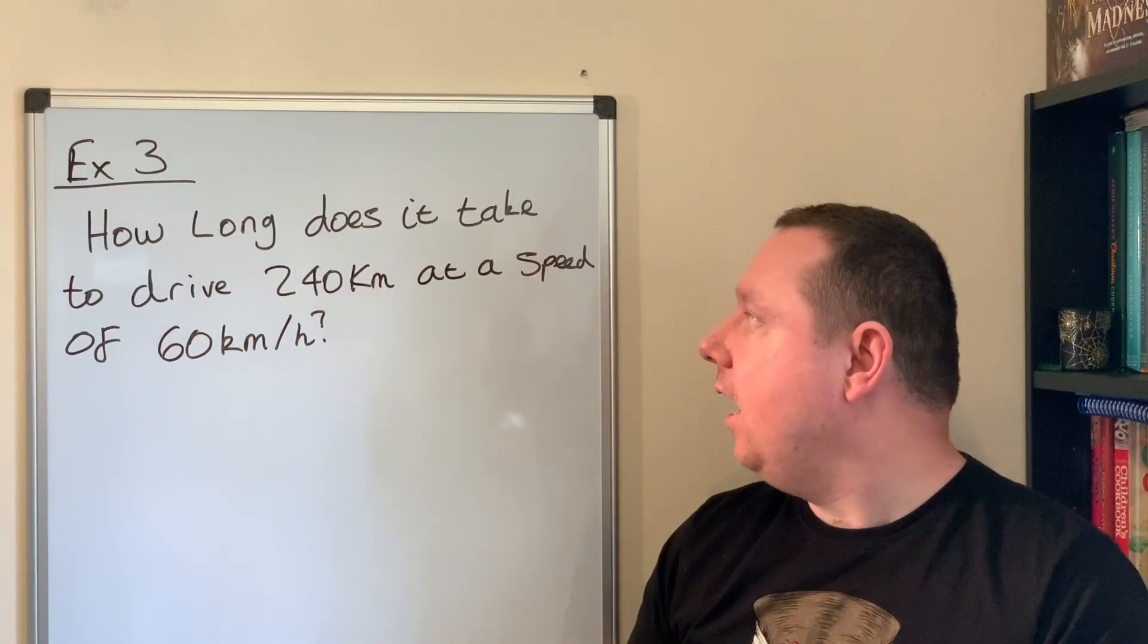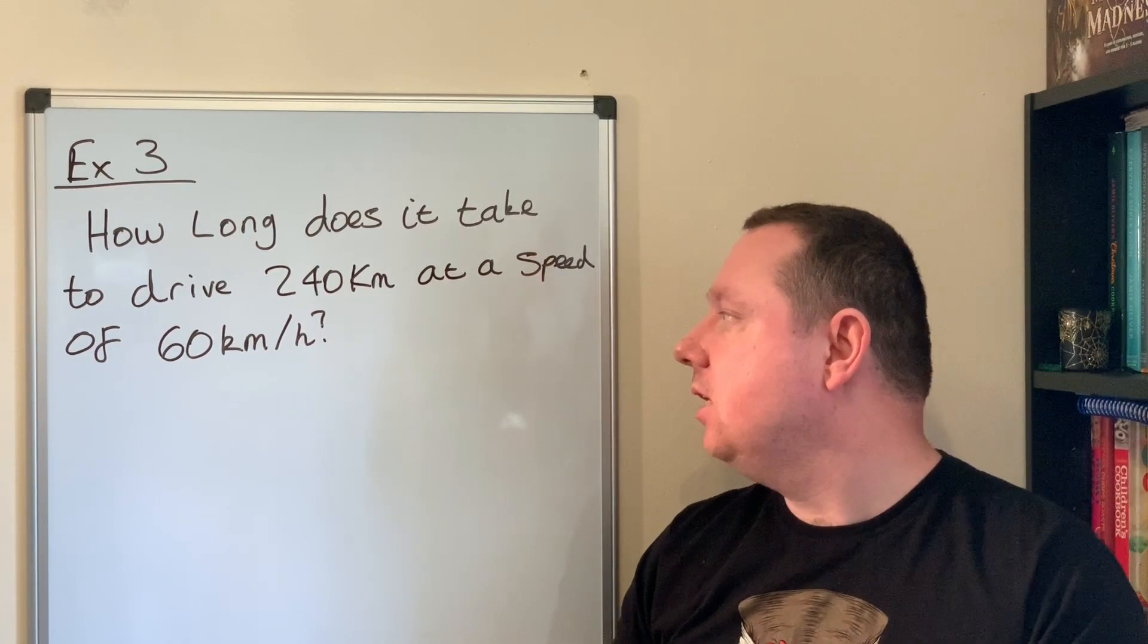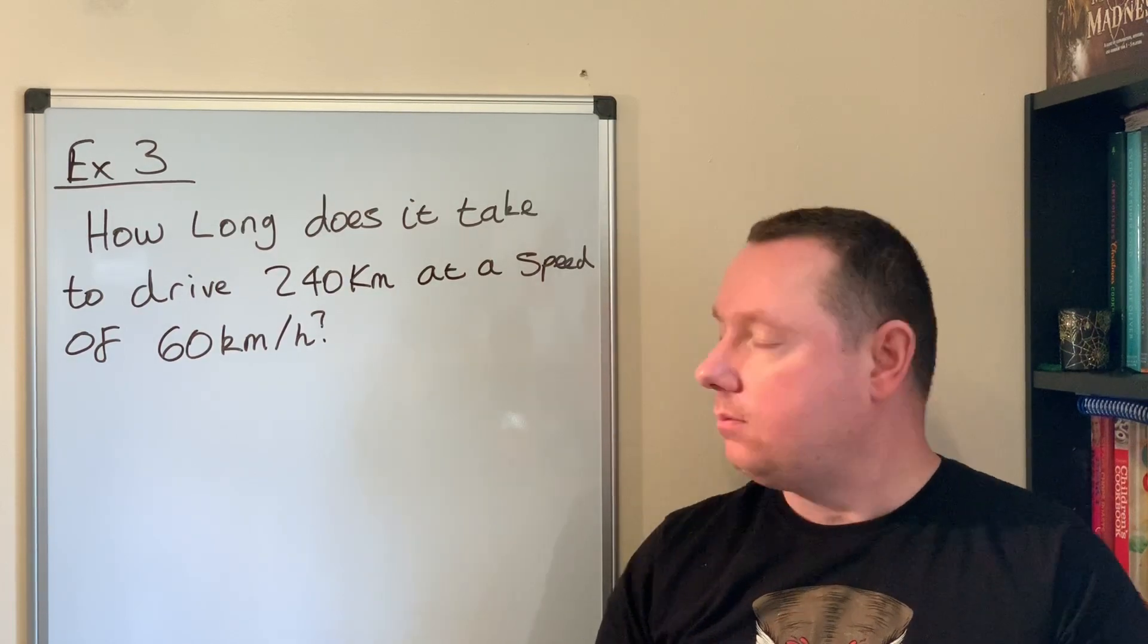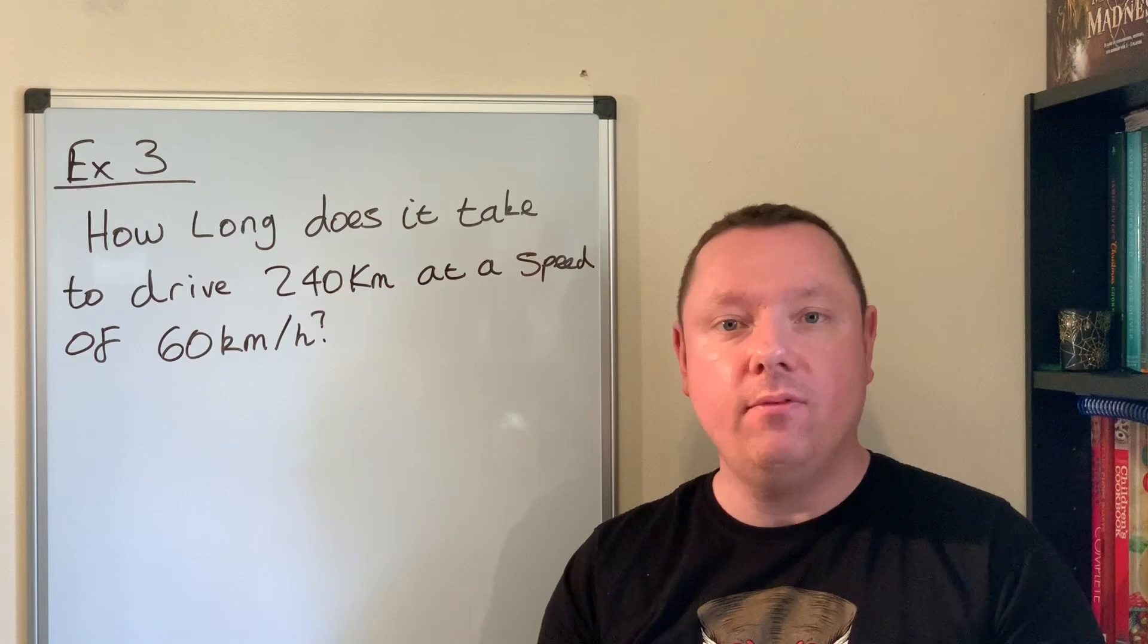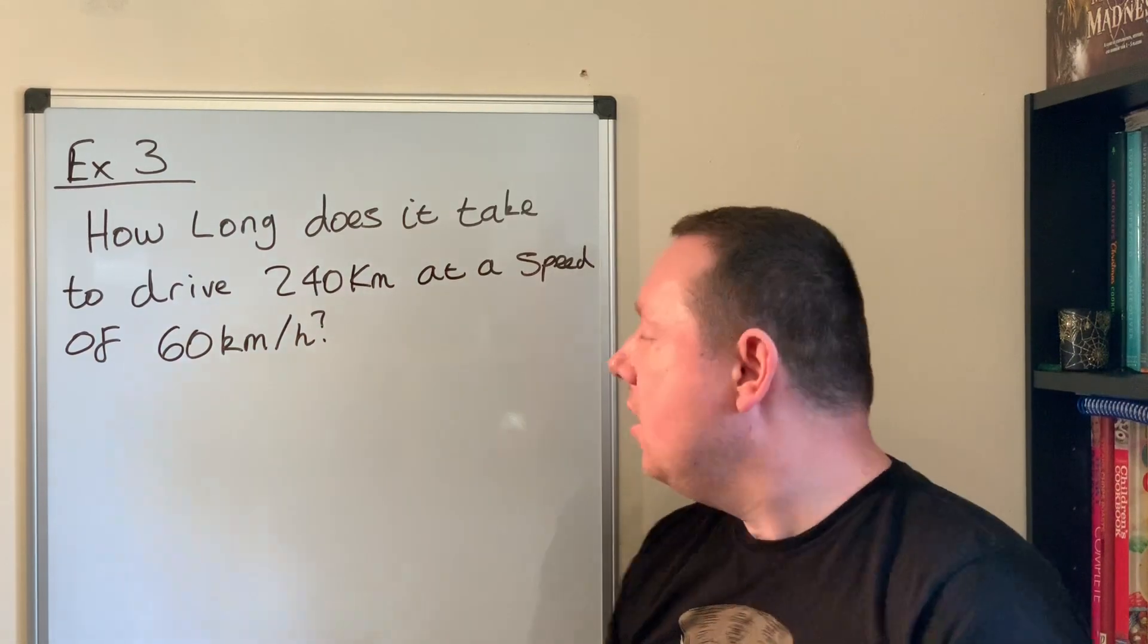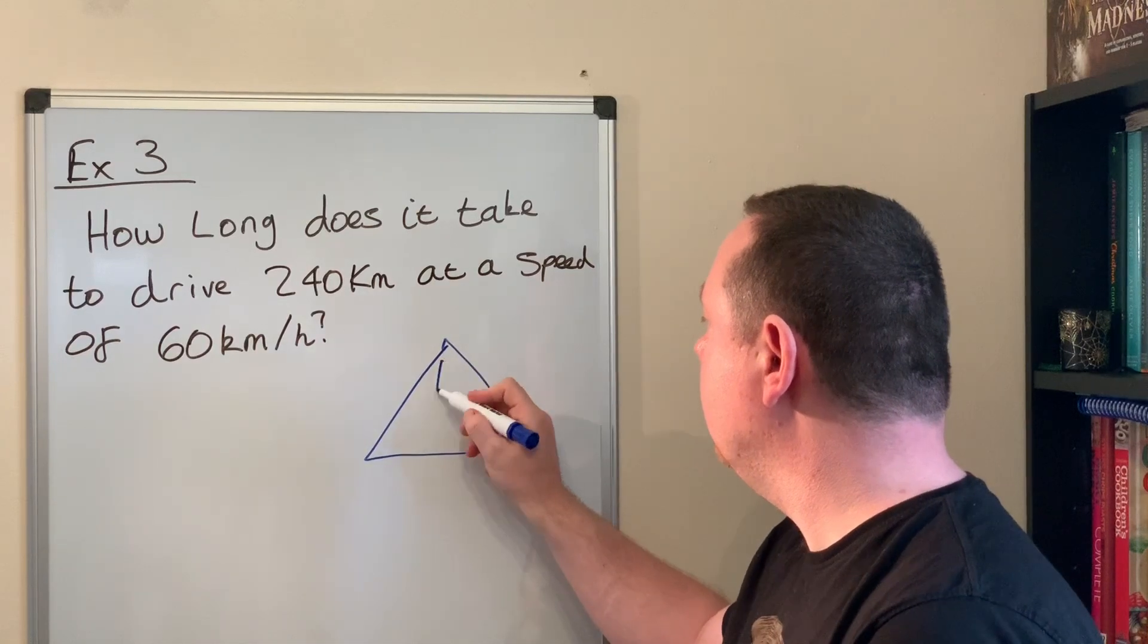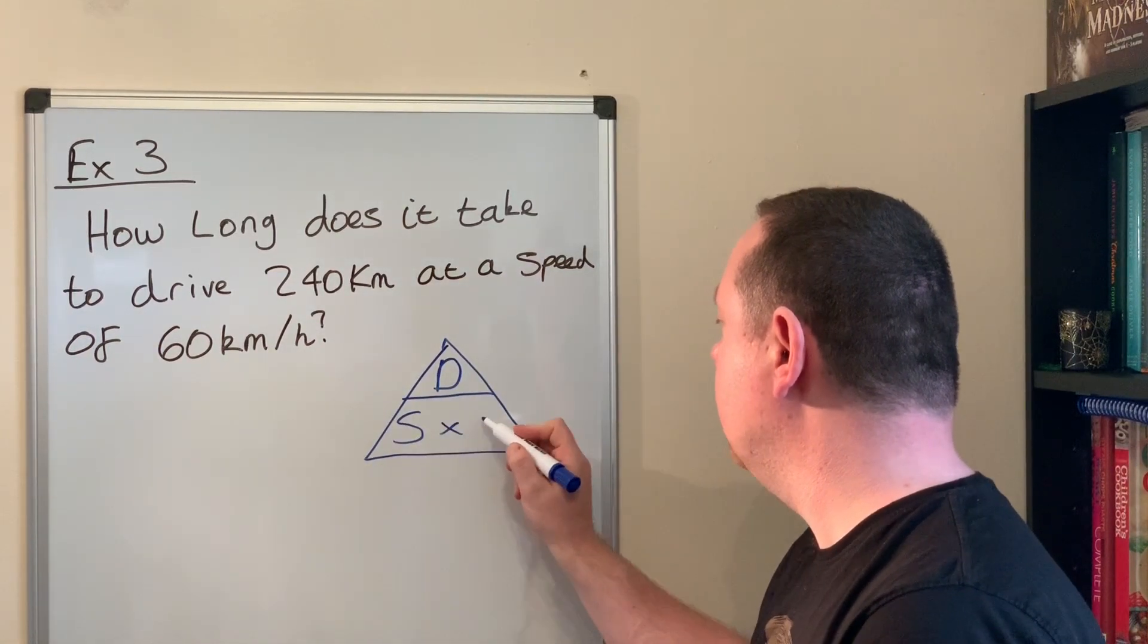Example three: How long does it take to drive 240 kilometers at a speed of 60 kilometers per hour? Again, we start exactly the same way. It doesn't matter whether I calculate distance, speed, or time - we draw our triangle. Distance over speed times time.